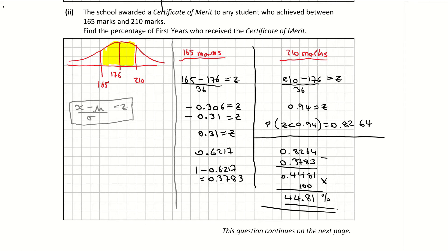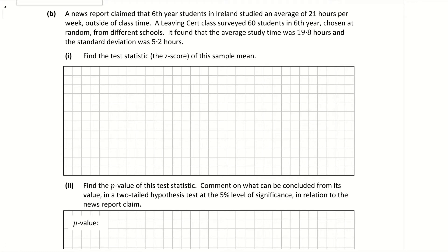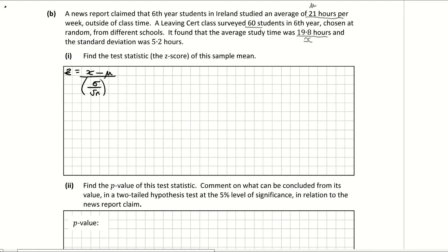Scrolling down to part B, part one: find the test statistic, i.e. the Z score, of this sample mean. The test statistic comes from page 35 in our log tables, written as Z equals X minus mu over standard deviation divided by the square root of n. We have 21 hours as the population mean mu, the average study time from the sample was 19.8 so that's my X, we have 60 students so that's n, and the standard deviation is 5.2.